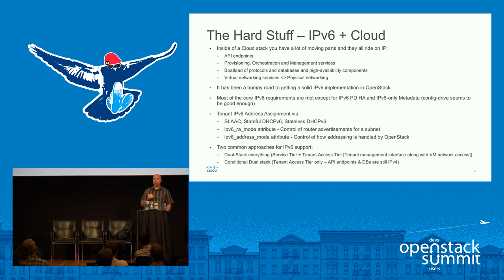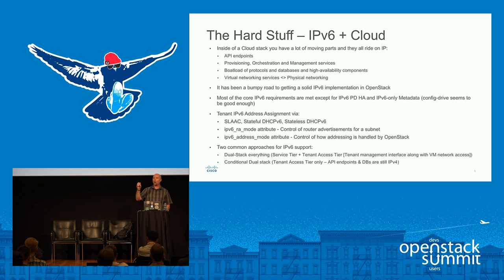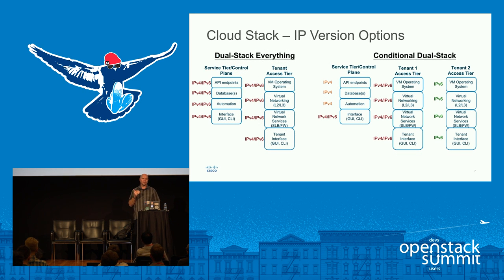We've had a tumultuous time with IPv6 in the OpenStack realm — it's taken a while to get to a fairly usable production-quality environment. There are still important things to do, like IPv6 prefix delegation with high availability and IPv6-only metadata support — we currently have no support for that at all. We'll talk about the tenant-facing side of IPv6: address assignments for things like SLAAC or DHCPv6, and whether to dual-stack everything versus use a conditional dual-stack approach.